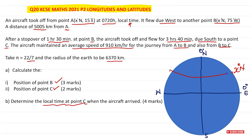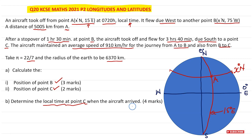The first angle tells the position of the latitude and the second is the position on the longitude. For point A, I draw in the latitude at x degrees north. Then for the longitude, we start from the prime meridian at 0 degrees — going east is positive, going west is negative. So 15 degrees east gives us the longitude line, and point A is where these two cross.